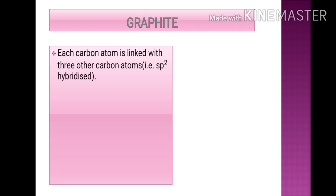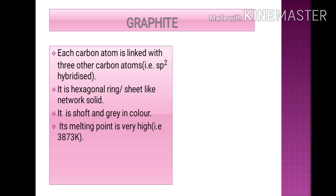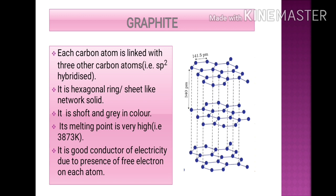In graphite, each carbon atom is linked with three other carbon atoms — sp2 hybridized — forming hexagonal ring or sheet-like network structures. It is soft and gray in color, therefore used in pencils. Its melting point is very high and due to its soft and slippery nature it is used as a grease. It is a good conductor of electricity due to the presence of one free electron at each carbon atom, as you can see in the diagram — one electron is left free which is responsible for conduction of electricity.